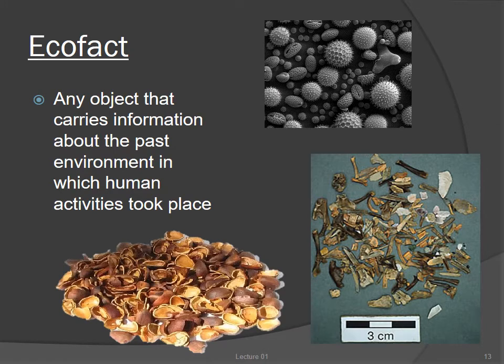The third type of archaeological data is an ecofact. An artifact is made or used by a human, but an ecofact is neither made nor directly used — nevertheless it carries evidence about human behaviors. Ecofacts tell us about the environment in which humans lived, and include plant seeds, animal bones, pollen, and soils.